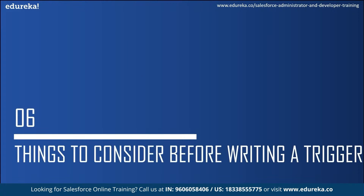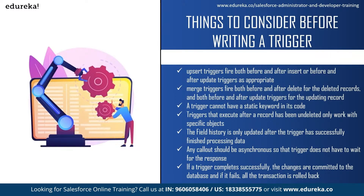Now let us look at things to consider before implementing a Salesforce trigger. First, upsert triggers can fire both before and after insert or before and after update triggers as appropriate. Next, merge triggers can fire both before and after delete for deleted records, and before and after update for updating records. Also, a trigger cannot have a static keyword in its code. Triggers that execute after a record has been undeleted only work for specific objects. Field history is only updated after the trigger has successfully finished processing. Any callout should be asynchronous so that triggers do not have to wait for the response. Finally, if a trigger completes successfully the changes are committed to the database; if it fails, the entire transaction is rolled back.